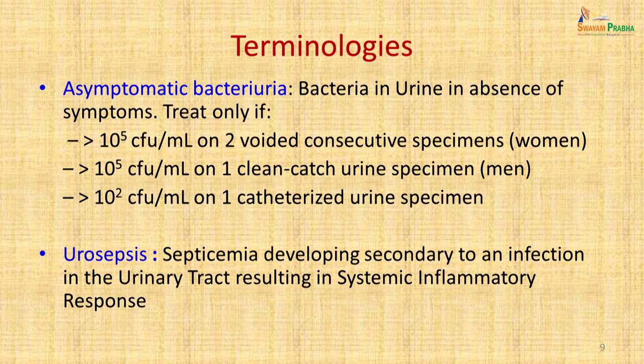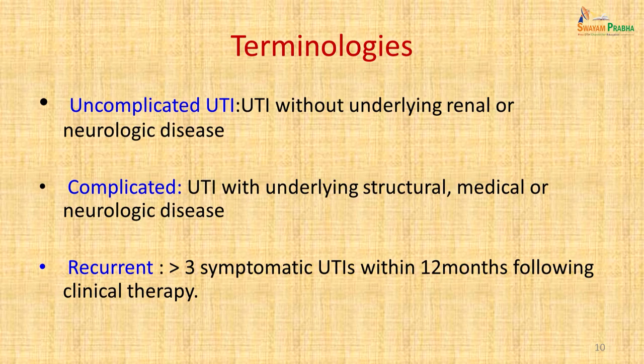Urosepsis is defined as septicemia developing secondary to a urinary tract infection, resulting in systemic inflammatory response (SIRS). Uncomplicated UTI is UTI without any underlying renal or neurological disease. Complicated UTI is UTI with structural, medical or neurological disease such as benign prostatic enlargement or bladder stones. Recurrent UTI is defined as more than three symptomatic urinary tract infections within 12 months following clinical therapy.